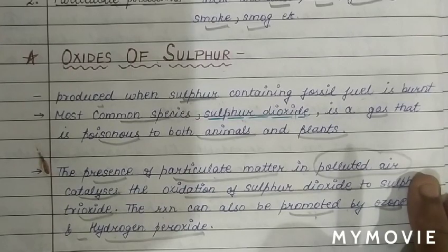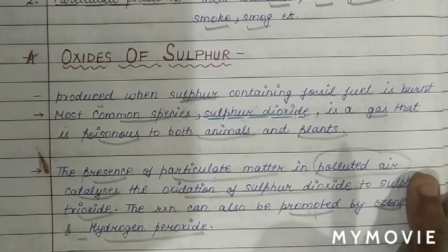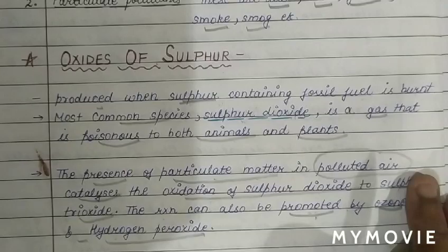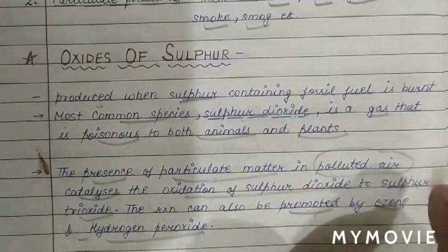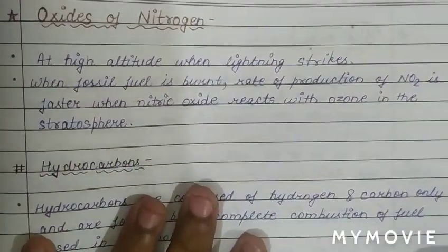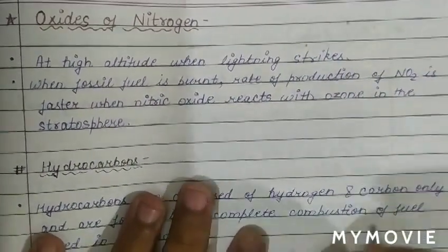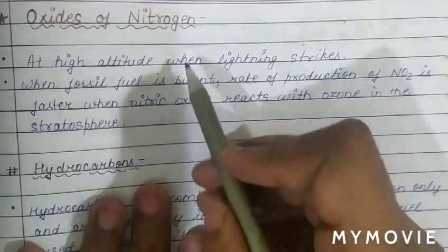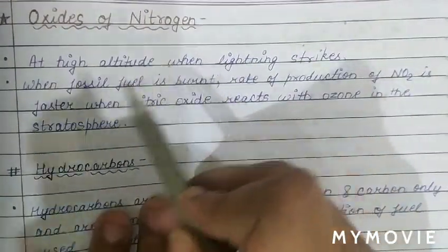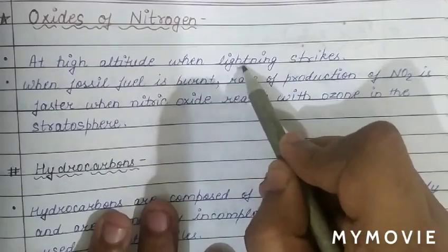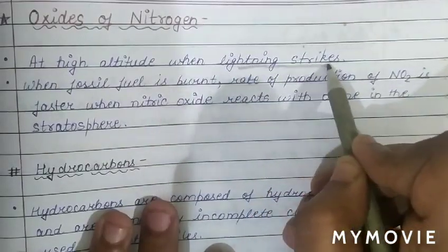We have discussed the first gaseous air pollutant — oxides of sulfur. Now we will discuss oxides of nitrogen. Oxides of nitrogen are obtained at high altitude when lightning strikes, and also when fossil fuel is burnt.